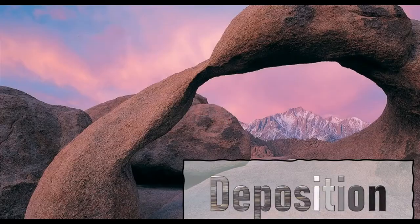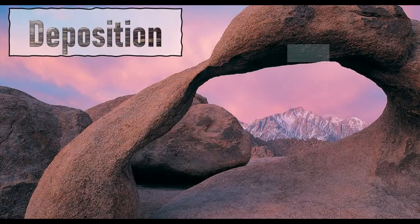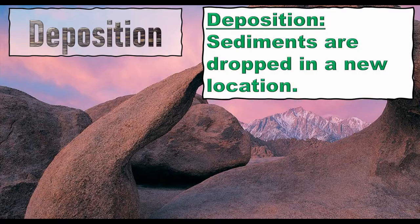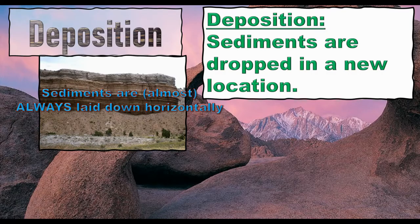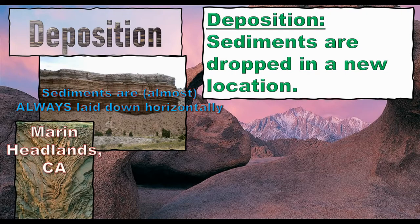Next, let's move on to deposition. In deposition, those sediments are dropped in a new location. Sediments are almost always laid down horizontally, creating that sort of layer cake or sandwich-looking structure that we associate with sedimentary rocks. I said almost always, because there are some examples where they haven't been — and even if they are laid down horizontally, that doesn't mean they're going to stay that way.